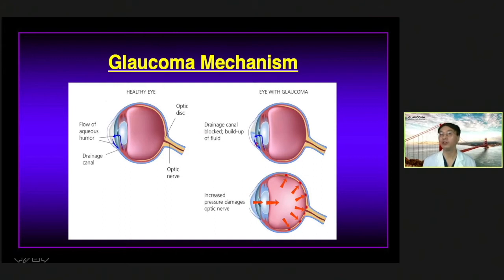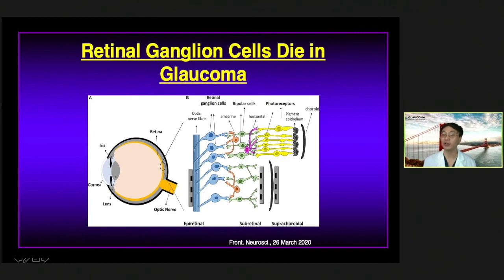In glaucoma, a healthy eye on the left shows normal production of fluid in the front that goes out through the angle. In glaucoma, in general, there's an elevation in eye pressure — shown by red arrows — causing damage to the optic nerve, which leads to visual loss. The cells specifically damaged in glaucoma are the retinal ganglion cells. Different parts of the retina will have death of those cells as a result of high pressure, and those areas of cell loss are where you will have loss of vision.